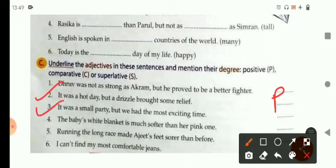Third one, it was a small party, but we had the most exciting time. And the most is telling you that the degree is superlative. So, here you will write the letter S. Now, in this way, you can complete fourth one, fifth one, and sixth one.